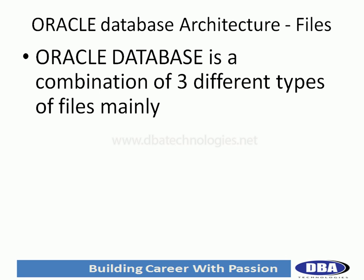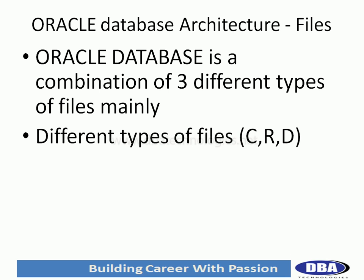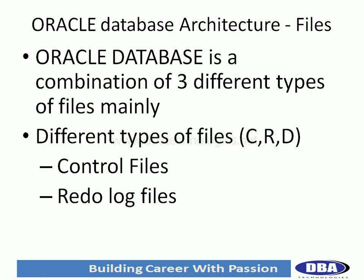Oracle Database operates at the storage level and has three different types of files. There are many files but we can segregate them into three types. The first is Control Files — as the name says, Control Files hold the control information about the database. Basically the physical structure of the database is going to be stored in the Control Files.